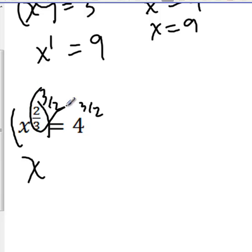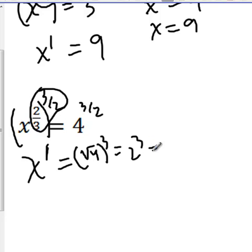And as you know, when you raise an exponent to another exponent, you multiply them, and that was the whole point because we want to know what x to the first is. And this is now 4 to the 3 halves, or the square root of 4 cubed, or 2 to the third, which is 8.